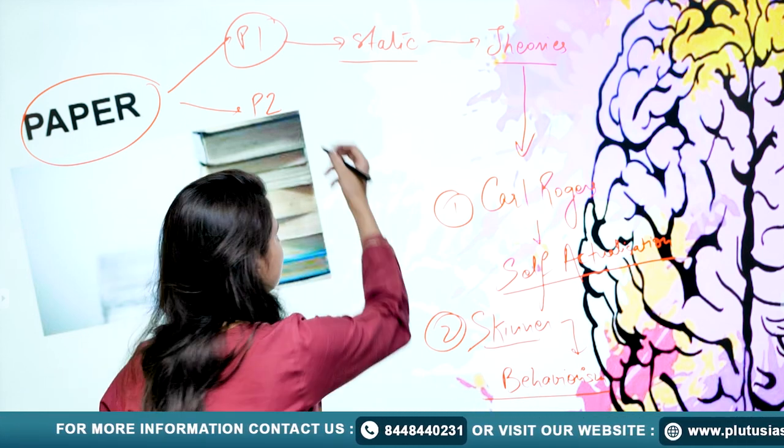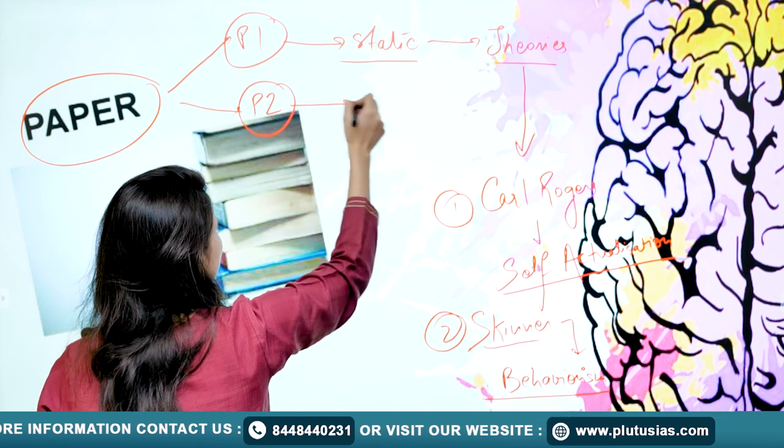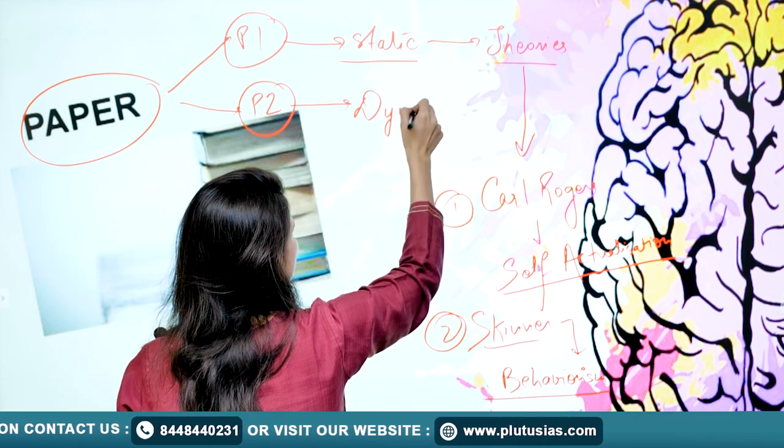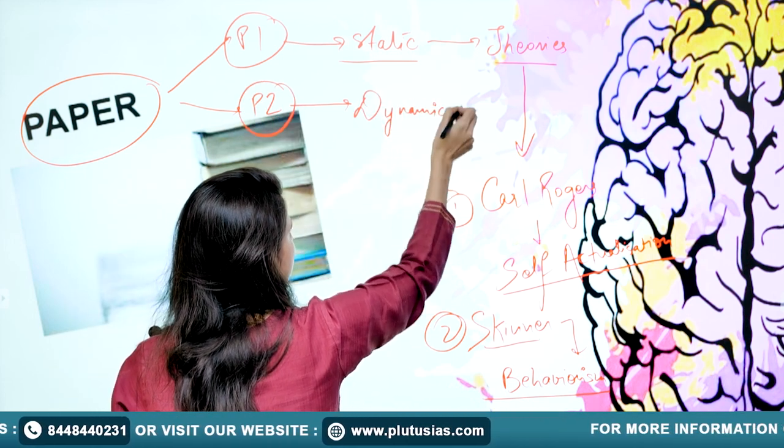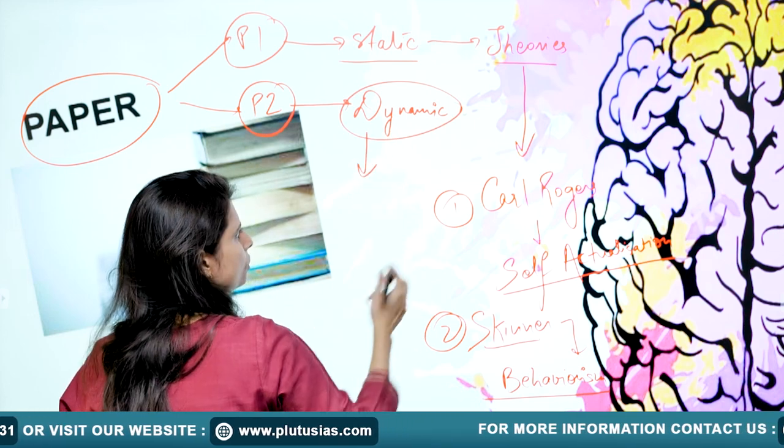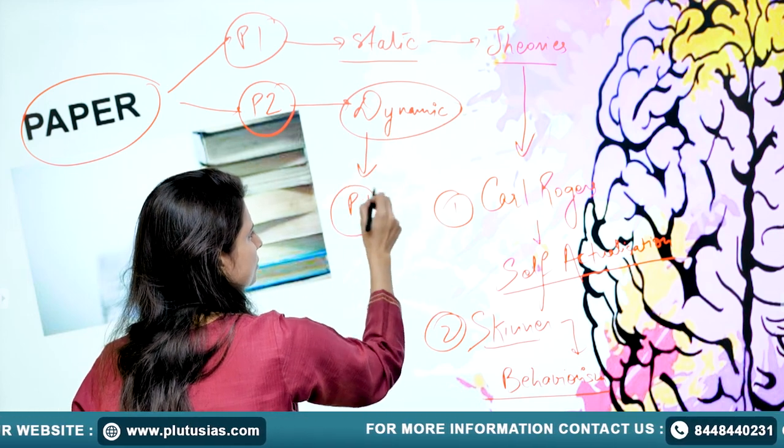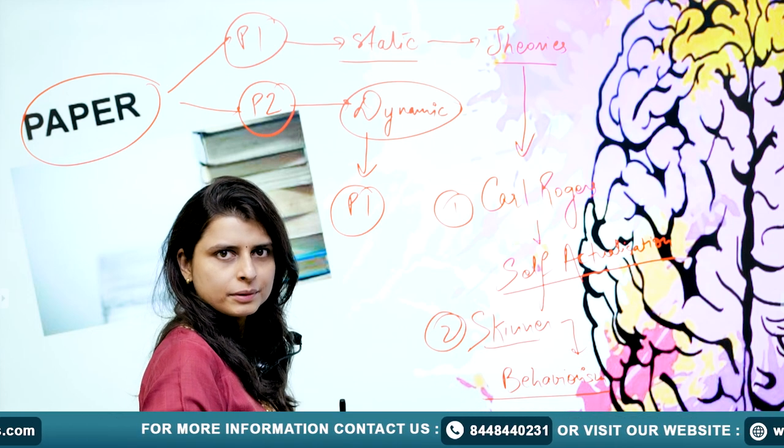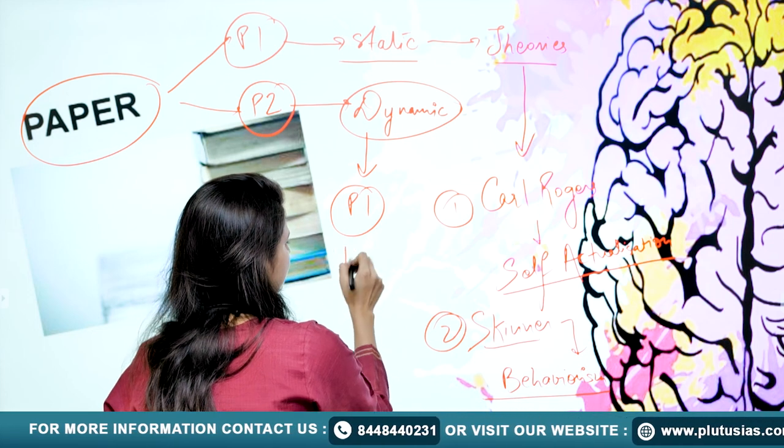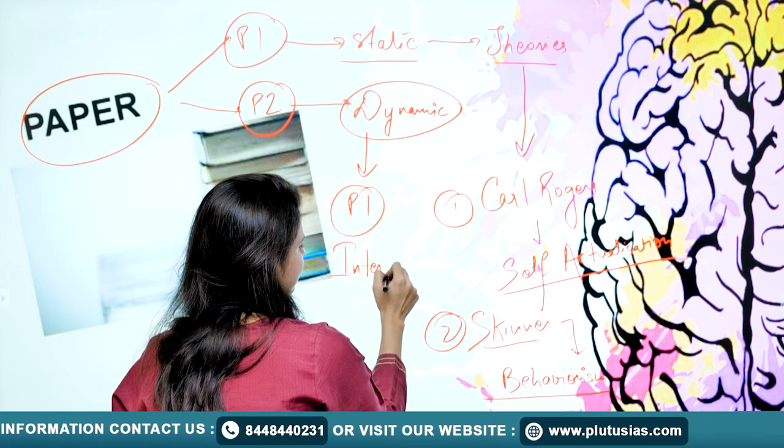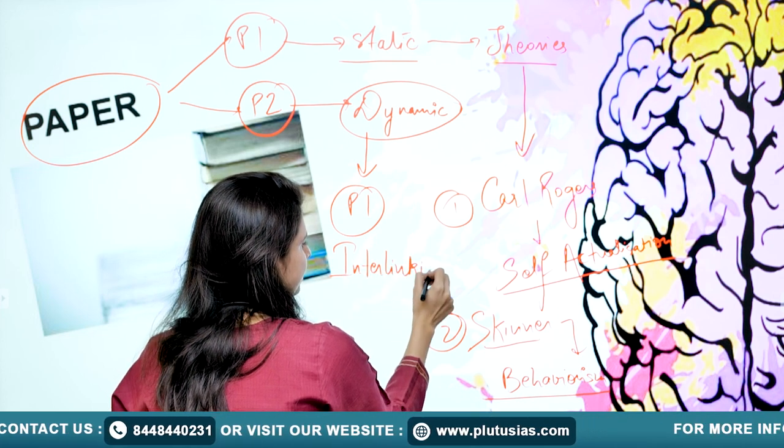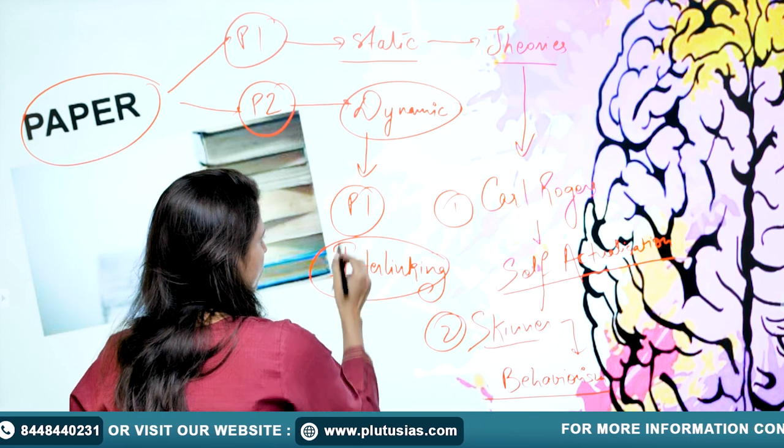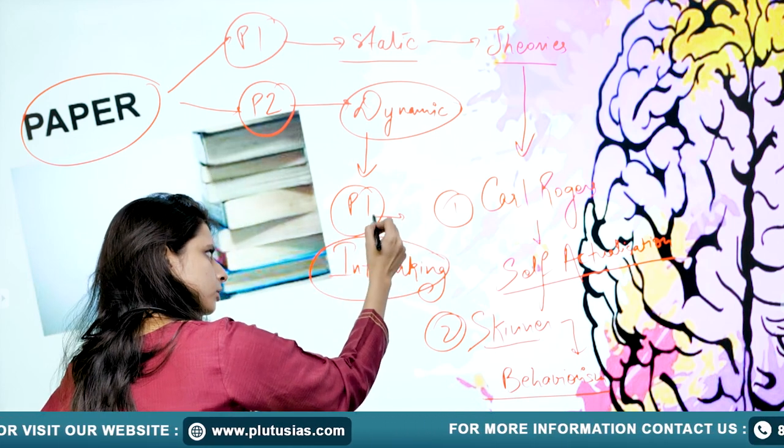Coming to Paper 2, this is very dynamic. For this, you require a good hold of Paper 1. That means you are able to implement and integrate Paper 1 with Paper 2. Here, I will talk about interlinking. Interlinking is done how? When Paper 1 is related to Paper 2.